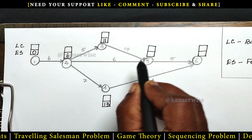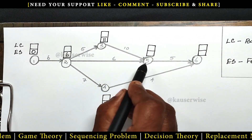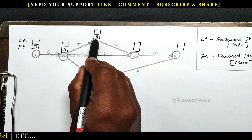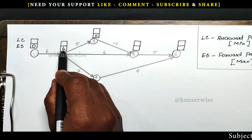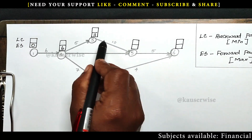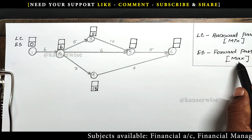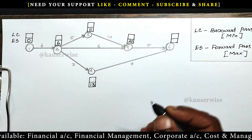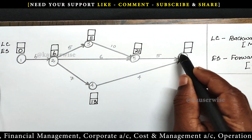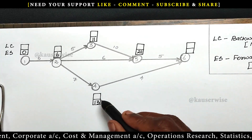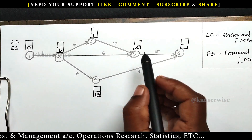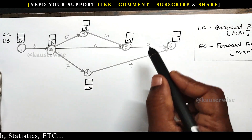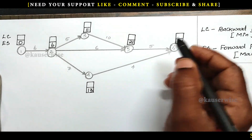Next, node 5. Here we have two options: from 3 to 5, and 2 to 5. We have to select the maximum duration. For the first option: 11 plus 10 equals 21. The second option: 6 plus 6 equals 12. Which is the maximum? 21 is the maximum, so for forward pass we select 11 plus 10 equals 21. The next one is the last node — node 6 — and again we have two options: 5 to 6 and 4 to 6. We select the maximum: 21 plus 5 equals 26; second option 13 plus 4 equals 17. Maximum is 21 plus 5 equals 26.